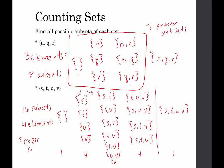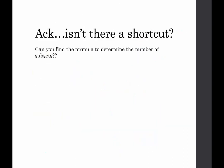This is a lot of work. What if there are 11 elements in a set? I'm not going to list them all out. So what's the relationship here? Is there a formula we can find? We're going to look at the number of elements and the number of subsets, and then compare the number of proper subsets.